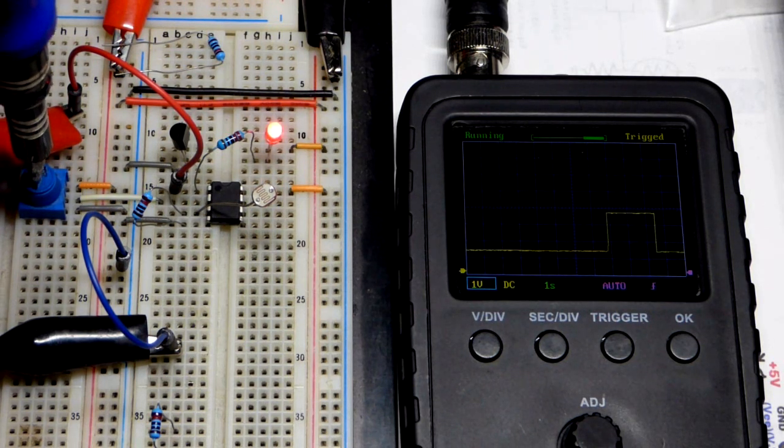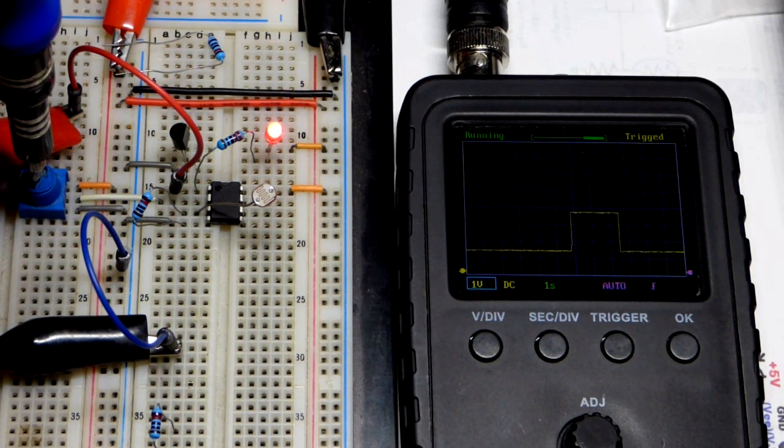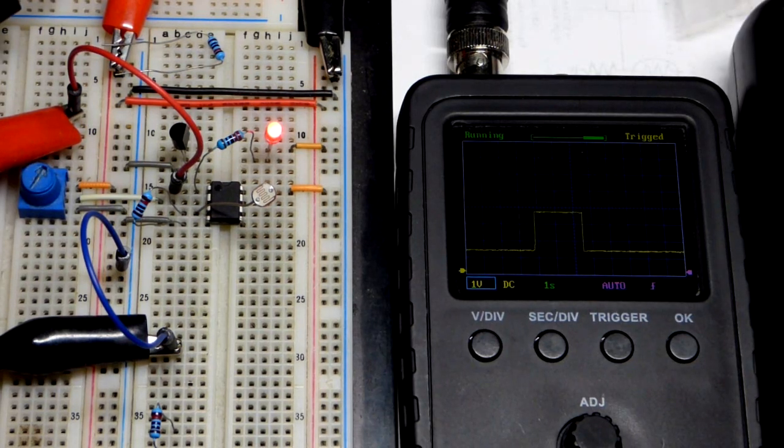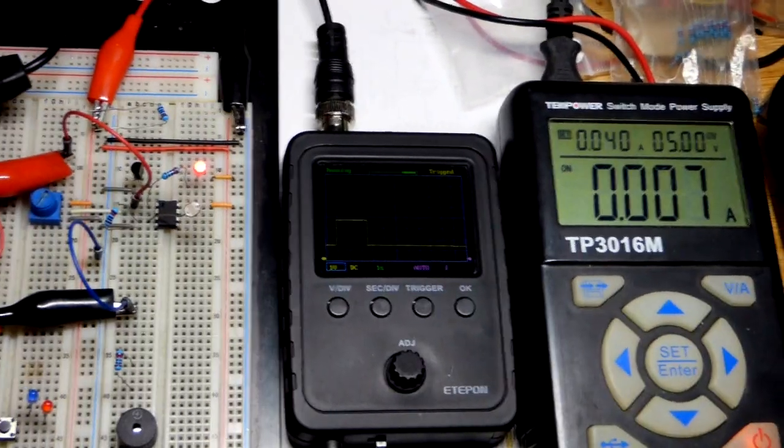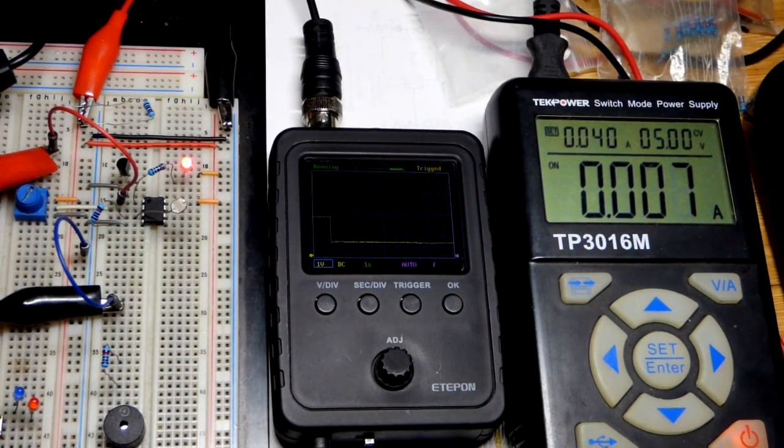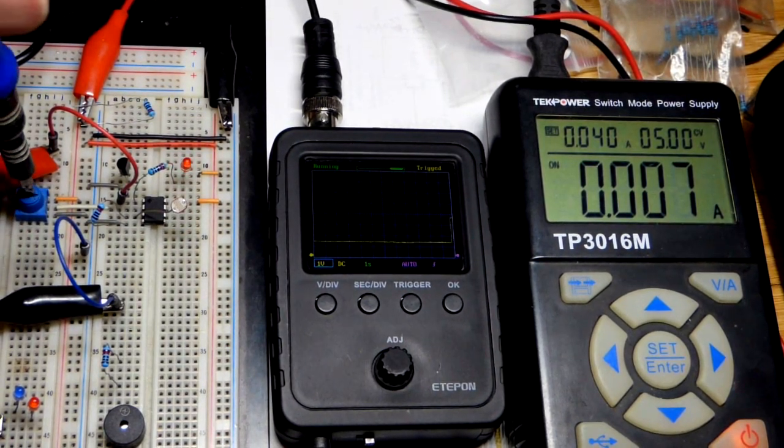This is a red LED, and so we actually have, it looks like, about seven milliamps of current approximately going through it when we sink it to ground there.